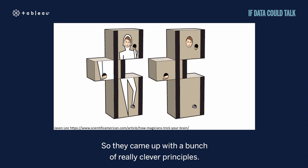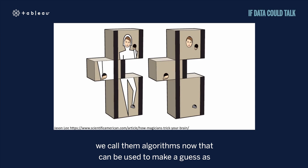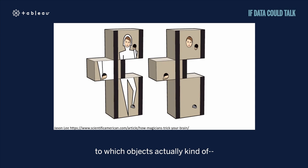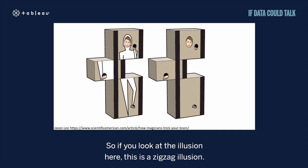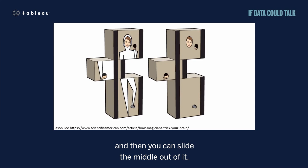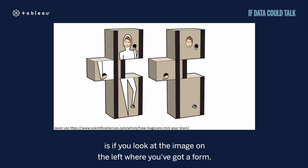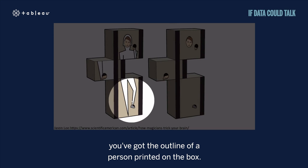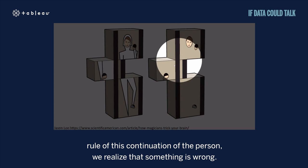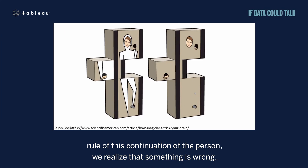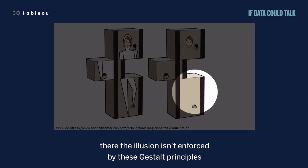They came up with clever principles — we could call them algorithms now — that make guesses about which visual features belong together, and these principles are exploited in magic tricks. The zigzag illusion: you put a person in a box and slide the middle out. With the outline of a person printed on the box, the illusion is far more effective because our brain is hardwired to group it together. As soon as you break that gestalt rule of continuity, we realize something is wrong.